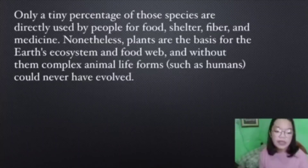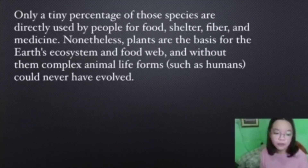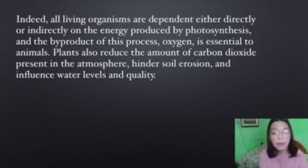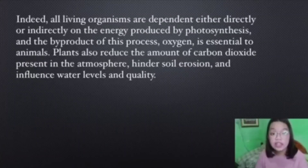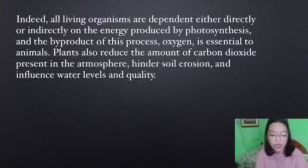Nonetheless, plants are the basis for the Earth's ecosystem, forming the foundation of the food web, and without them, complex animal life forms such as humans could never have evolved. Indeed, all living organisms are dependent either directly or indirectly on the energy produced by photosynthesis. Oxygen, a byproduct of this process, is essential to animals. Plants also reduce the amount of carbon dioxide present in the atmosphere, hinder soil erosion, and influence water levels and quality.